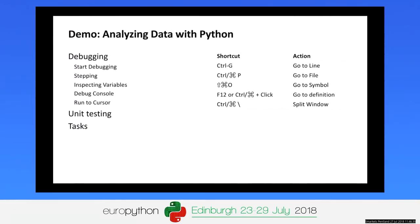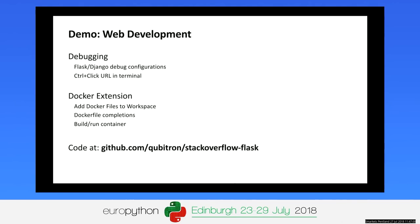Quick recap: we went through debugging — starting, stepping, inspecting variables, using the debug console, typing expressions, using Run to Cursor — plus keyboard shortcuts for jumping to files and symbols, going to definition, configuring unit testing, and tasks. Now we'll do some web development and show how to set up advanced debug configurations for Flask and Django, as well as using the Docker extension.